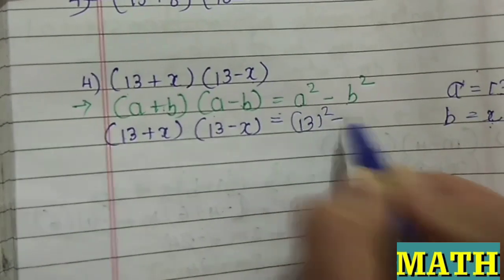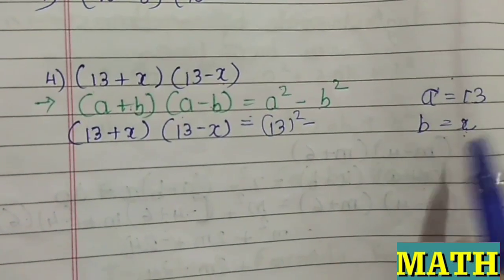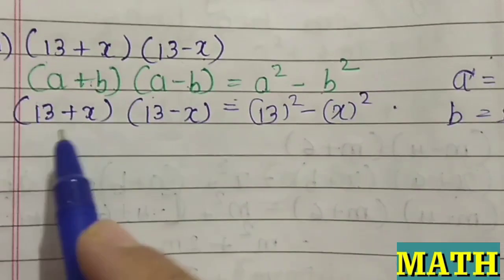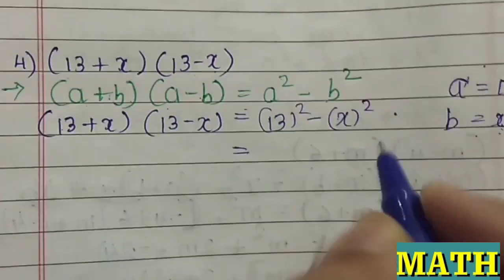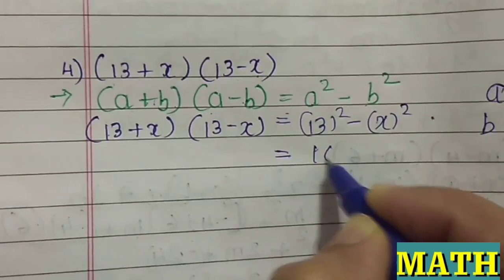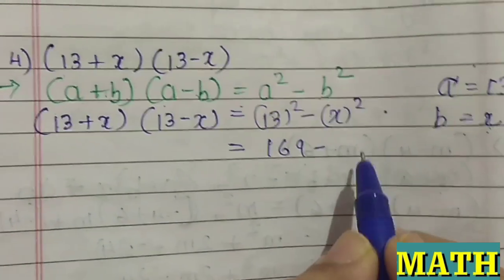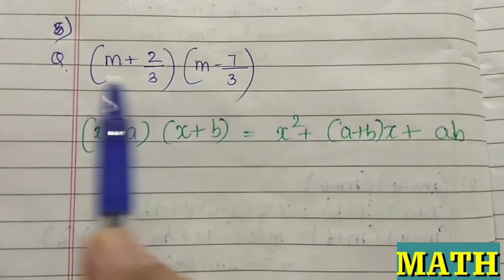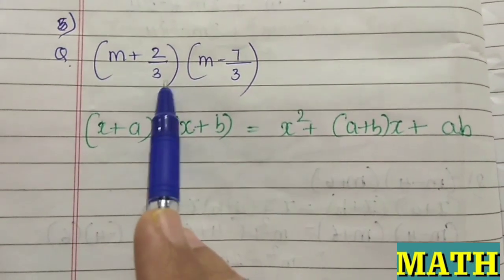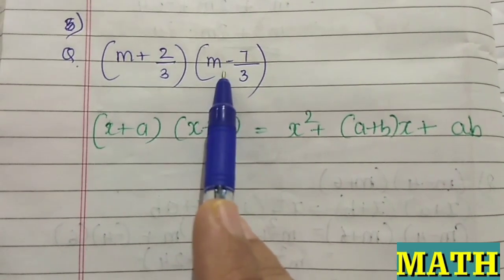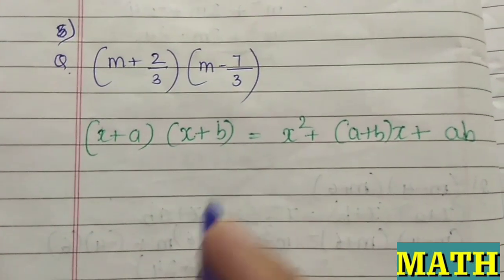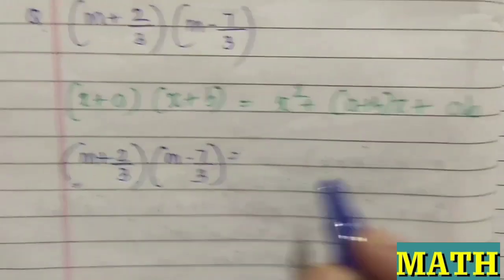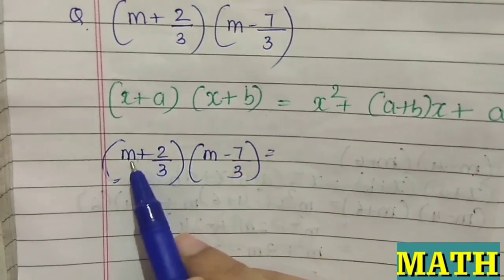So a² means 13², and b² means x². Therefore (13+x)(13-x) = 13² - x². This is another example which is of the form (x+a)(x+b) again.